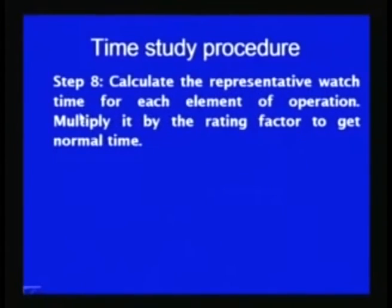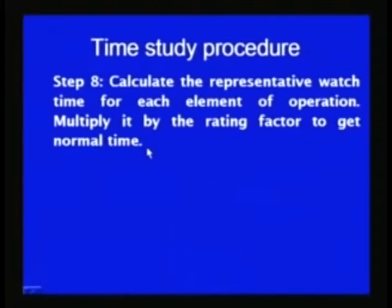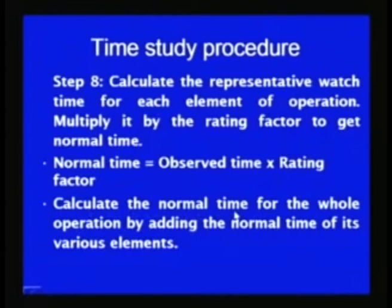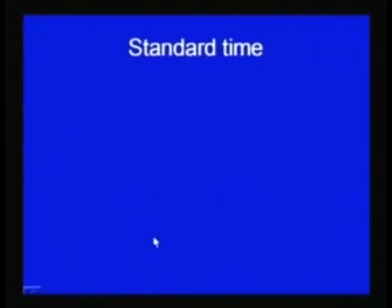The next step in the time study procedure is to calculate the representative stopwatch reading for each element of the operation and multiply it by the rating factor to get the normal time. After noting down the observed time values and rated values of the operator, the product of the two is used to find out the normal time. The normal time for all elements is then added to find out the total normal time for the operation.